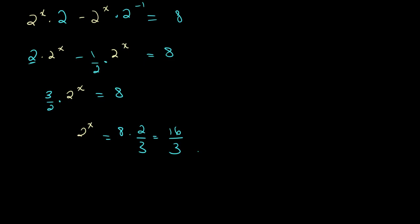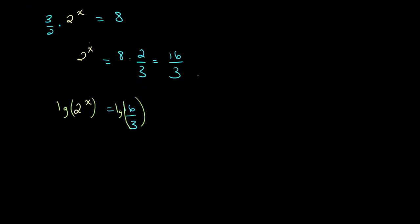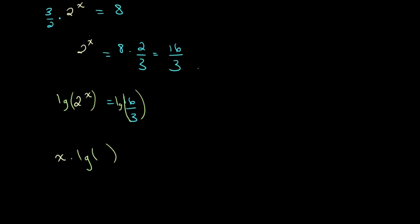So now we have our equation in a form where we can apply log to either side and we'll be able to solve for x. We have 2 to the power of x is equal to 16 over 3. You take log of both sides so log of 2 to the power of x and log of 16 over 3. From this we get x times log of 2 is equal to log of 16 over 3. Now we solve for x so we get x is equal to log of 16 over 3 divided by log of 2.